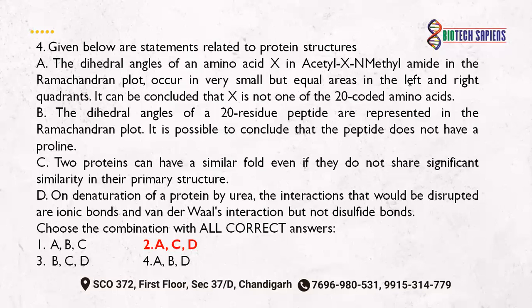The third statement: two proteins can have a similar fold even if they do not share significant similarity in primary structure — this is correct. The fourth statement: when you denature a protein with urea, the interactions disrupted are ionic and van der Waals but not disulfide bonds. This is correct because disulfide bonds are covalent bonds, and urea does not disrupt them — it only disrupts ionic bonds and van der Waals interactions.